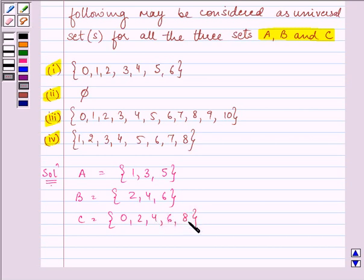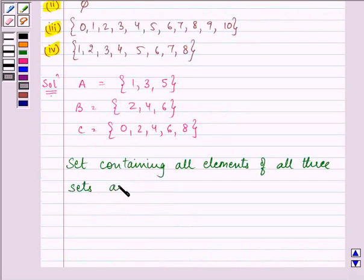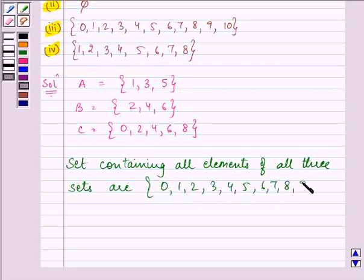The set which contains all the elements of all the three sets will be starting from 0, 1, 2, 3, 4, 5, 6, 7, 8, 9, and 10.